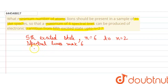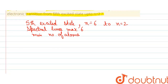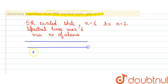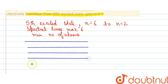We have to find out the minimum number of atoms required to undergo this electronic transition. Let us first draw the spectral lines for the hydrogen-like species that are possible for the transition taking place from n equals to six down to n equals to two. The energy levels are: n equals to six, five, four, three, and two.